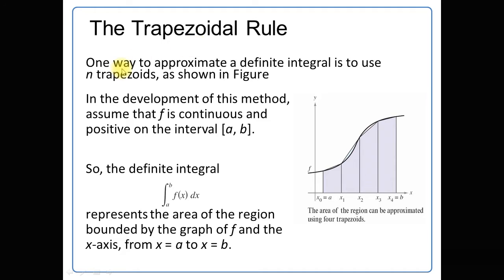Now, the trapezoidal rule: one way to approximate a definite integral is to use n trapezoids, as shown in this figure. Dear students, what is a trapezoid? A trapezoid means a trapezium — a geometrical figure in which two sides are parallel and the other two sides are non-parallel. You see over here in this figure: these two sides are parallel and these two sides are non-parallel. So this is a trapezoidal figure, and we can find the area of the trapezoidal figure by using the trapezoidal rule.